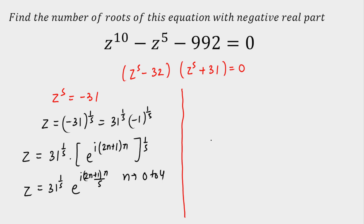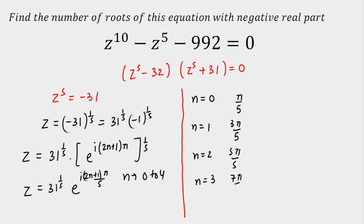Now let's write the angles for each n. For n=0, the angle is π/5. For n=1, the angle is 3π/5. For n=2, the angle is 5π/5 (which equals π). For n=3, the angle is 7π/5. For n=4, the angle is 9π/5.